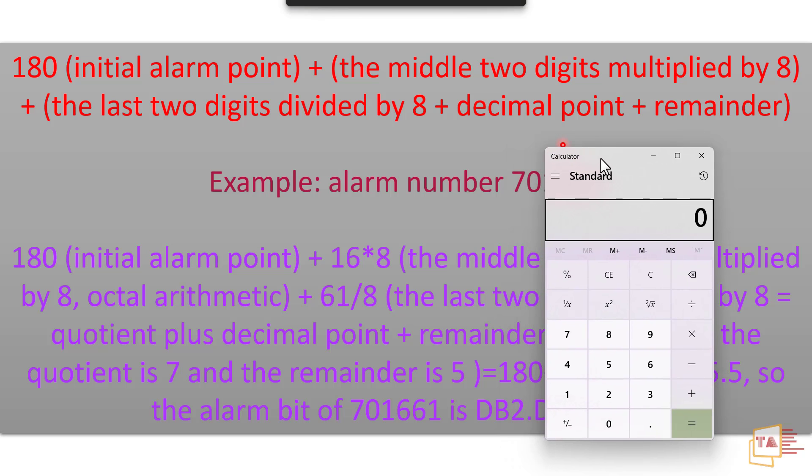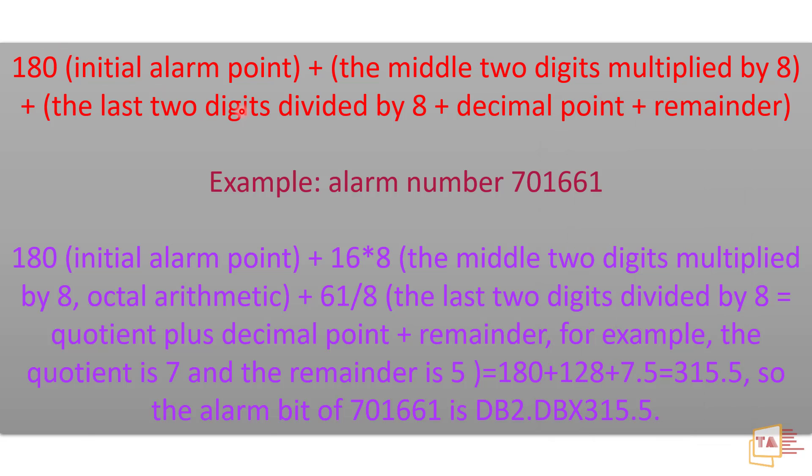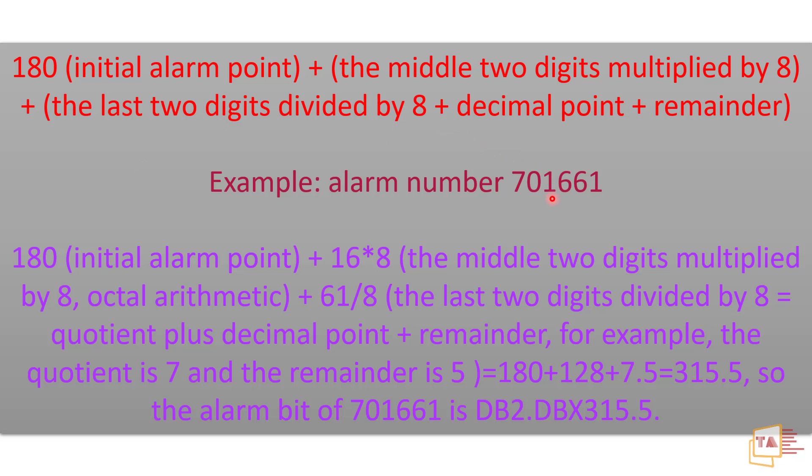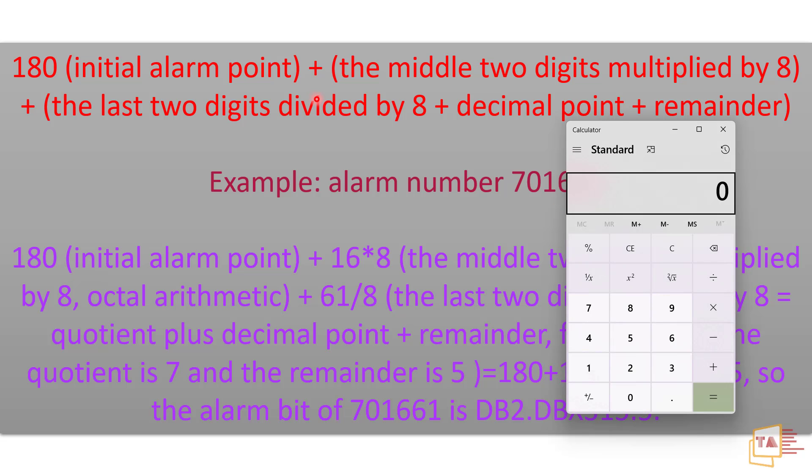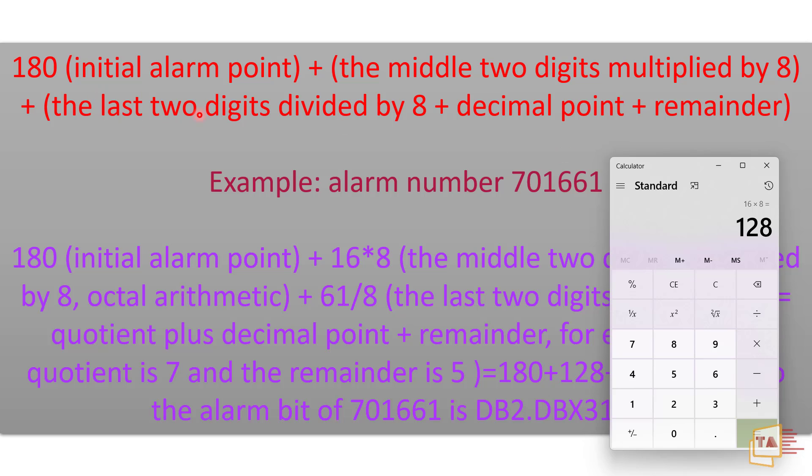So 180, what is 180? 180 is the starting. We should take the middle two numbers, the middle two digits multiplied by 8. So 16 times 8, we have to do some calculation. 16 times 8 we got 128. After that, the last two digits divided by 8.